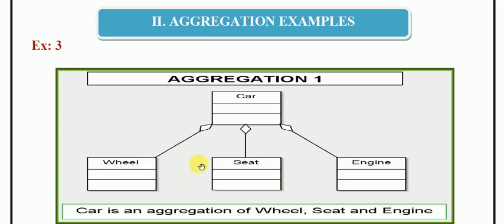These three entities are objects themselves. Car is associated with these three. This is an aggregation relationship. Car contains wheel, seat, and engine. These are parts of car. Wheel is a part of car, seat is a part of car, and engine is also a part of car.